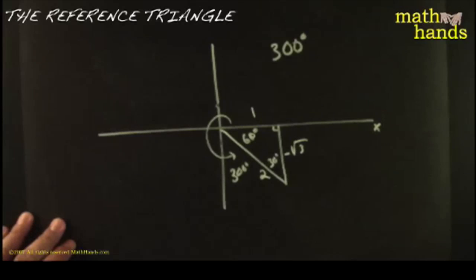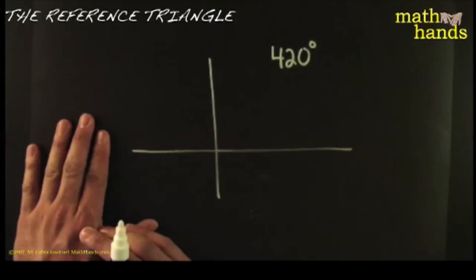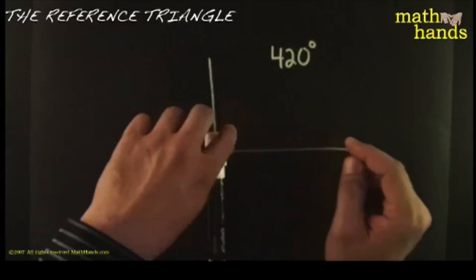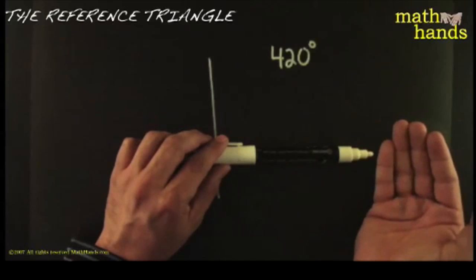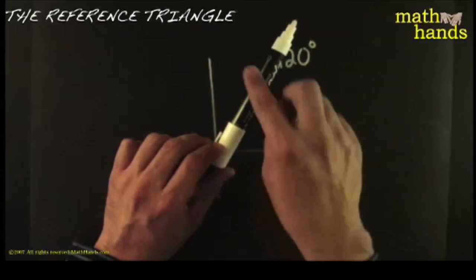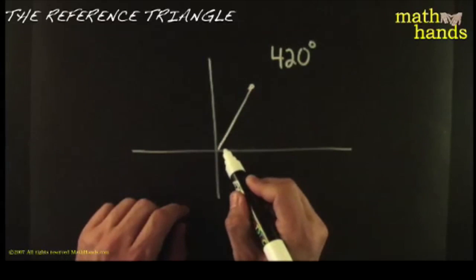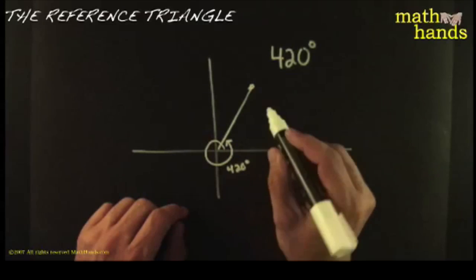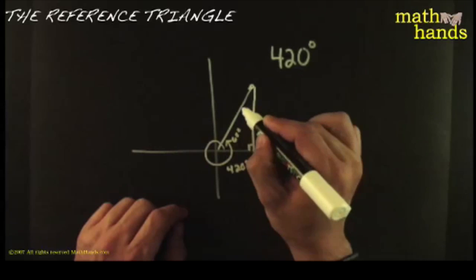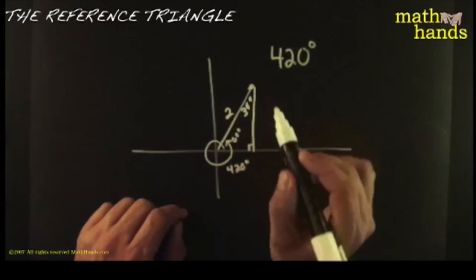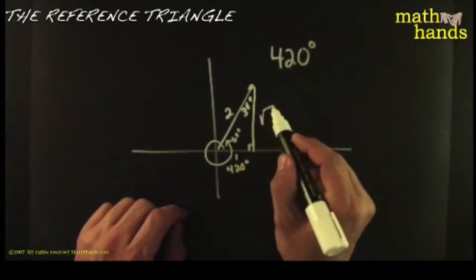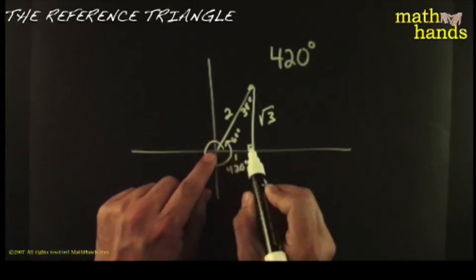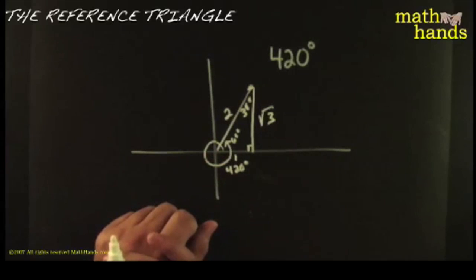Let's try it for 420 degrees. You go all the way around — that's 360. How much more have we got to go after you've gone 360? You've got to go 60 more, so that would be right around there. 420 degrees. You drop a perpendicular to the x-axis. This angle is 60 degrees, this one is 30 degrees. Make this any length you want — 2. Across from 30 you find the small one: 1. Across from 60 you find the square root of 3 times the small one. Label the signs: to the right is positive, up is positive. That's 420 degrees — this is called the reference triangle.